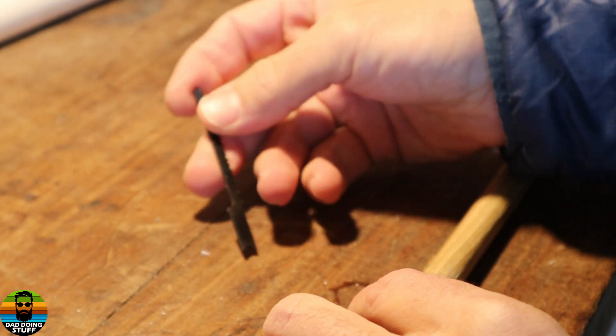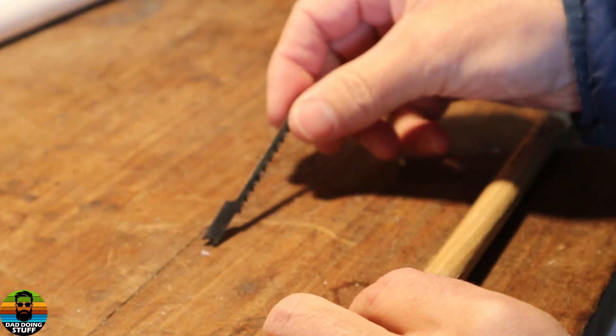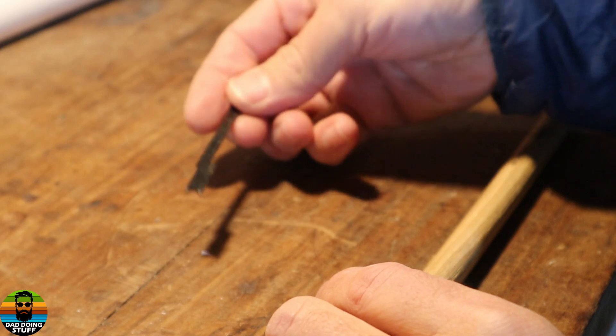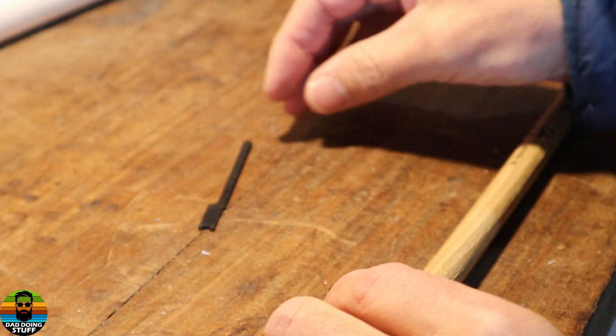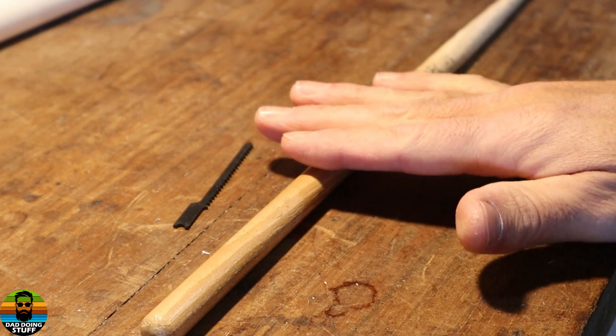And then I'm gonna take an old jigsaw blade that I have and I'm just gonna make a little pumpkin carving knife out of it. So let's go ahead and get this cut up.